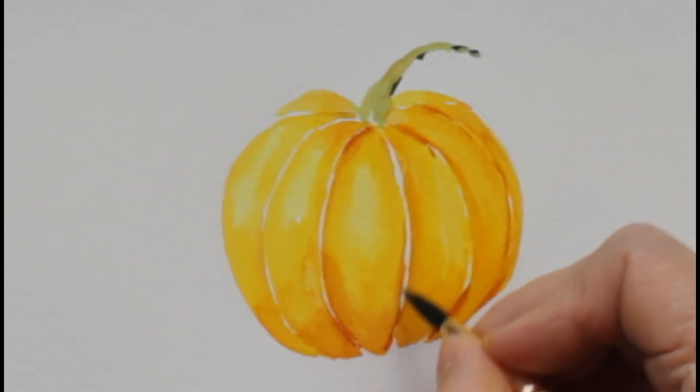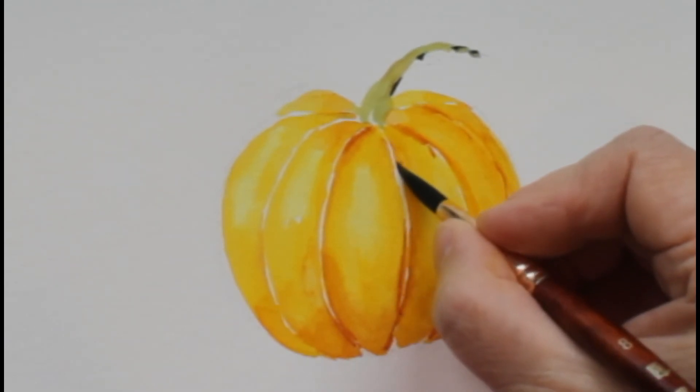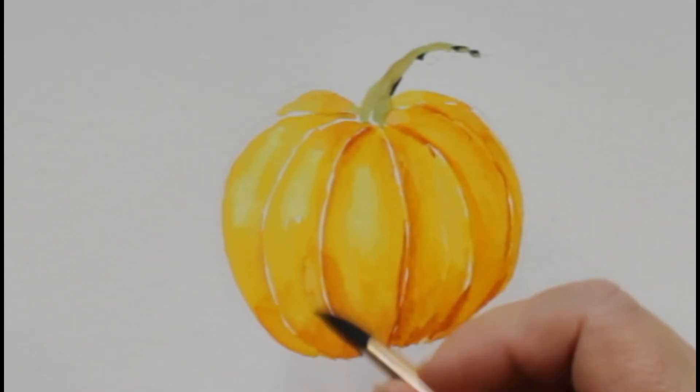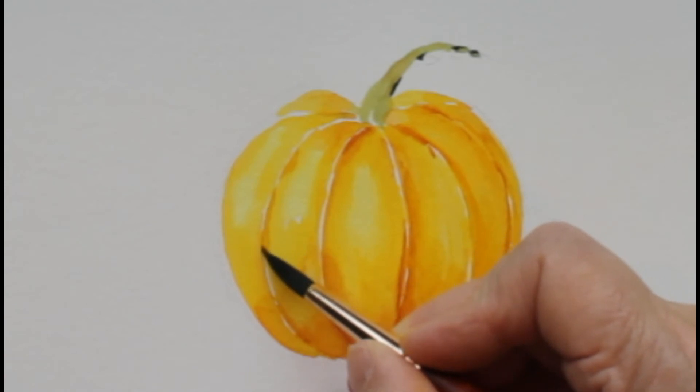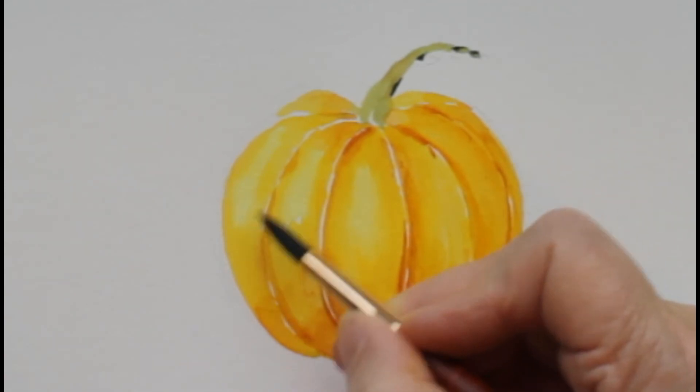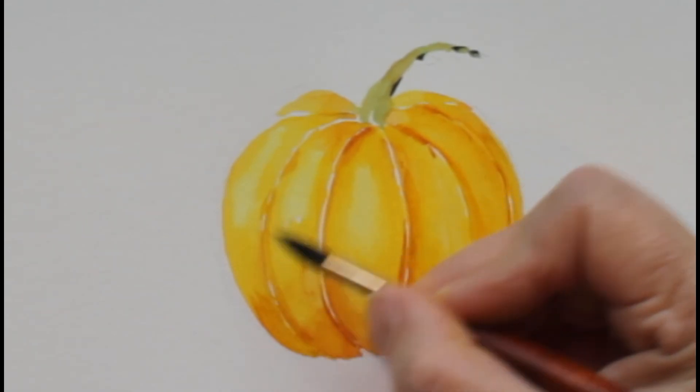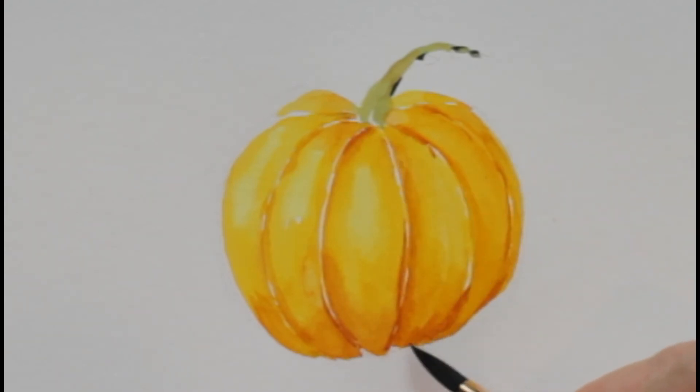See how the white is kind of disappearing at this point? The white in between the sections is disappearing a little bit. We're going to leave some of it there where it'll look natural, like where the highlights are hitting it. Right now, adding more shading and taking away some of that white space that divides the pumpkin into sections.